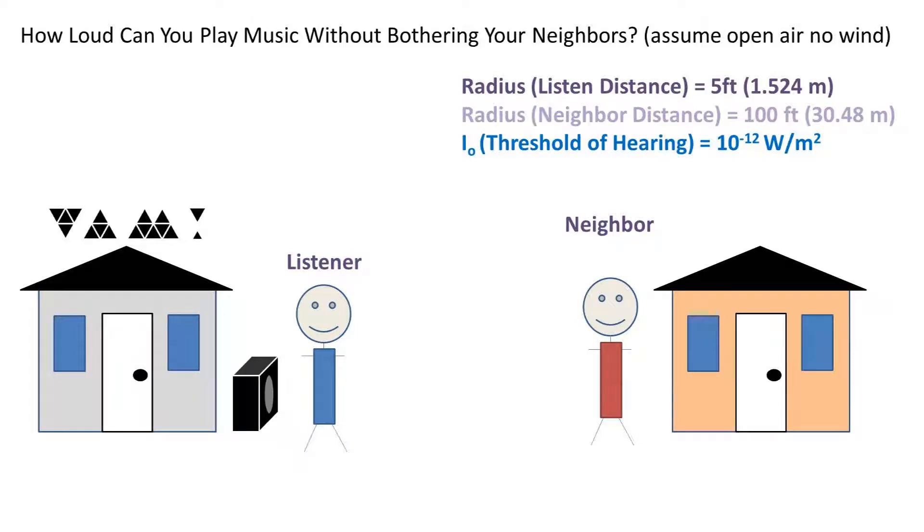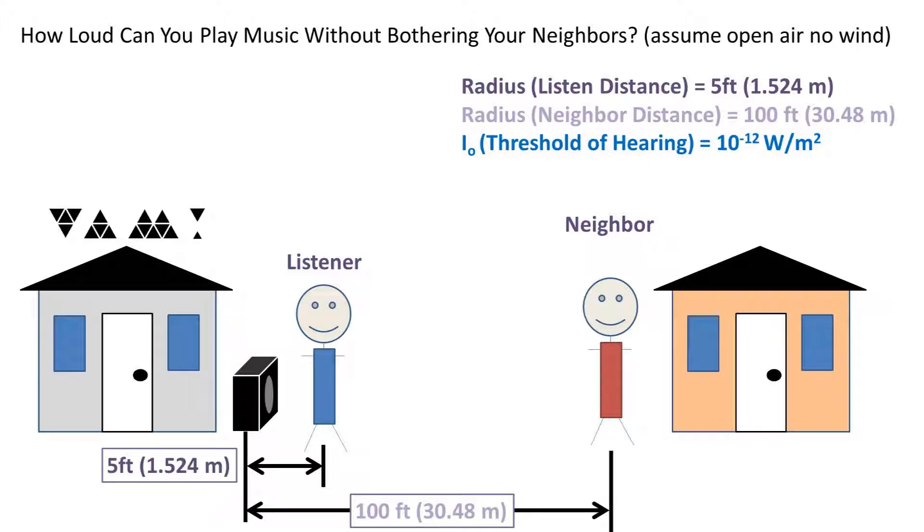In this problem, we want to find out how loud you can play music without bothering your neighbors. We will be assuming open air and no wind. The sound system is 5 feet away from the listener and 100 feet from the neighbor outside. These values are also listed in meters.